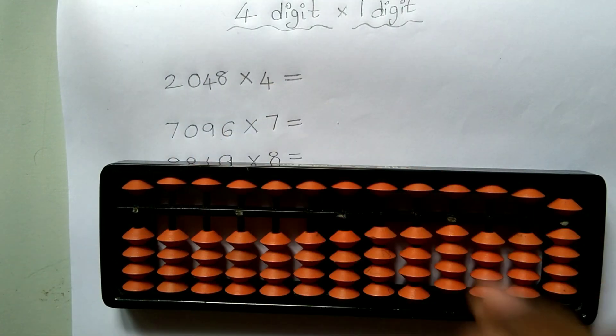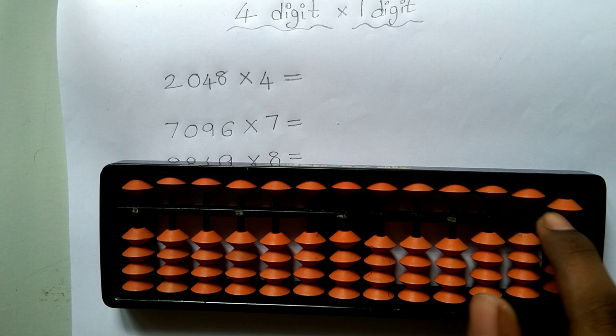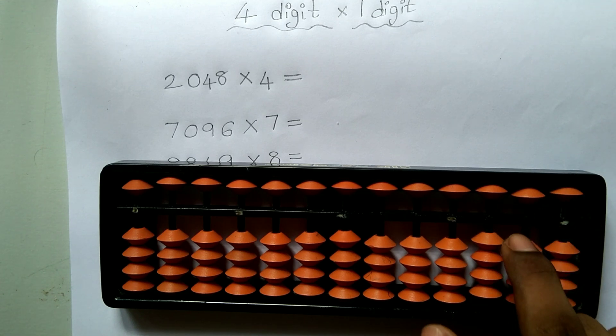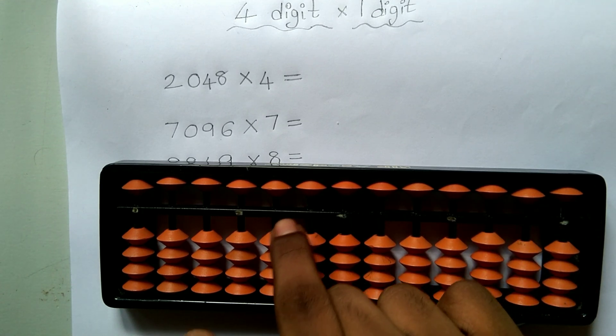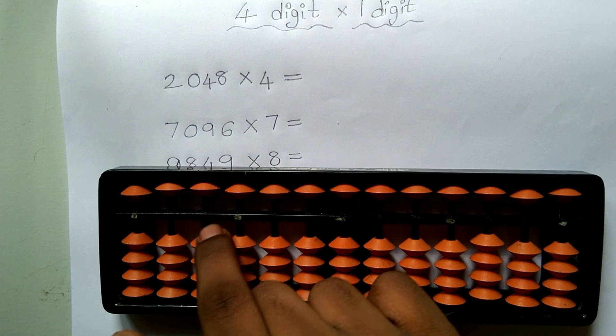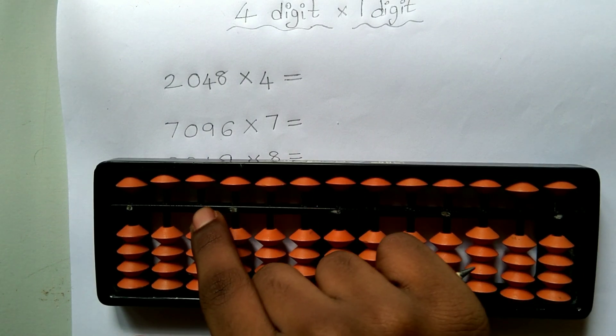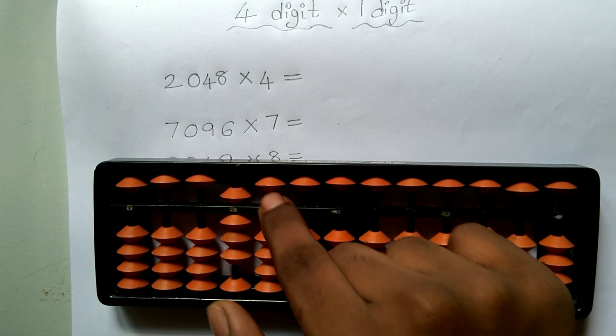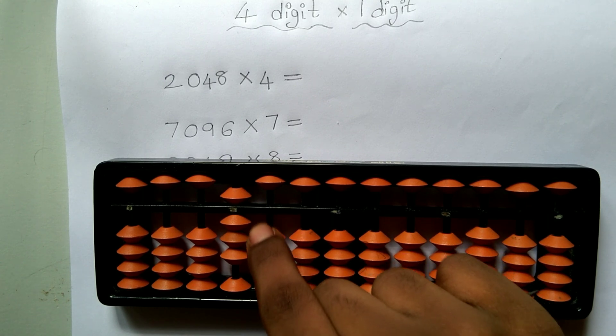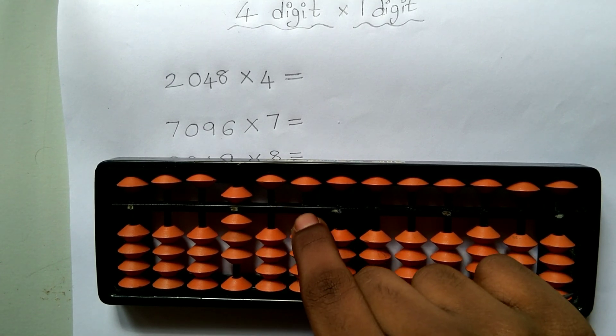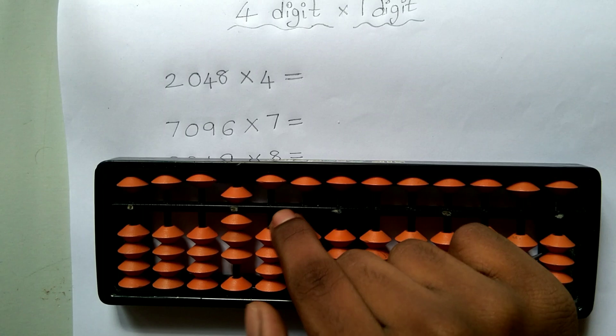So let's do it. 4-digit × 1-digit is always a 5-digit answer as we know. So let's count till 5: 1, 2, 3, 4, 5. We have to begin from this rod. So 0, 8 and 0. And again, we have to continue from this rod. We have to not continue from the next rod. We have to continue from the rod where we ended.